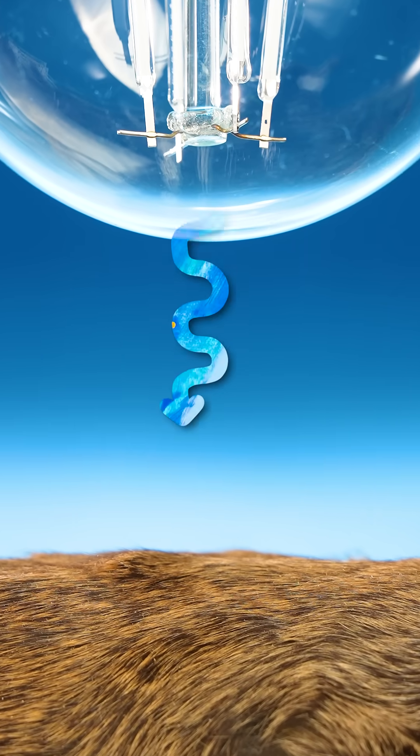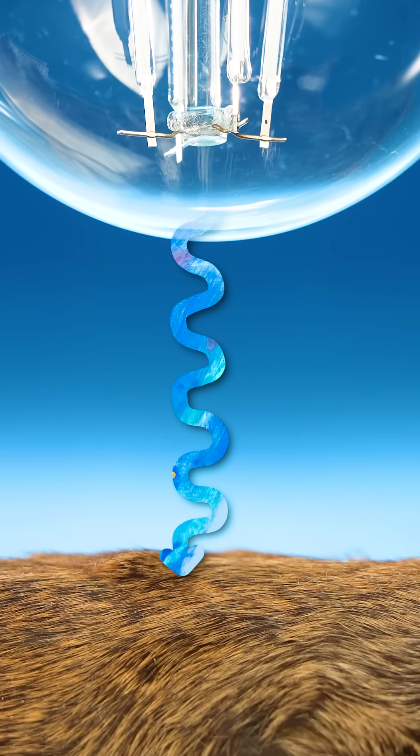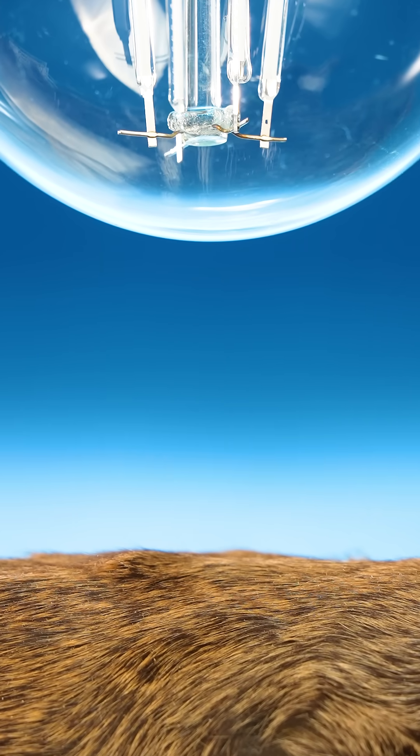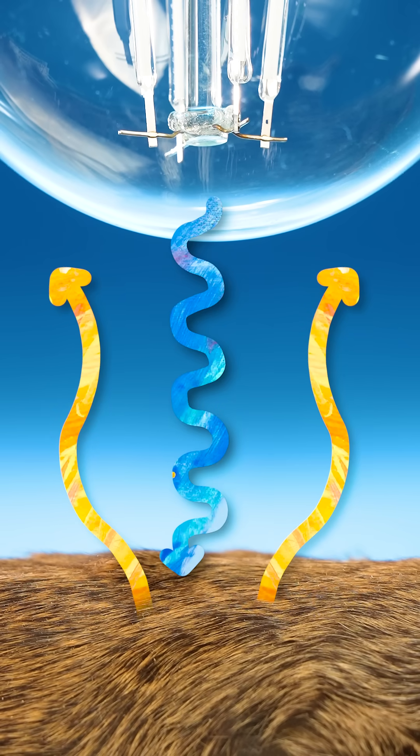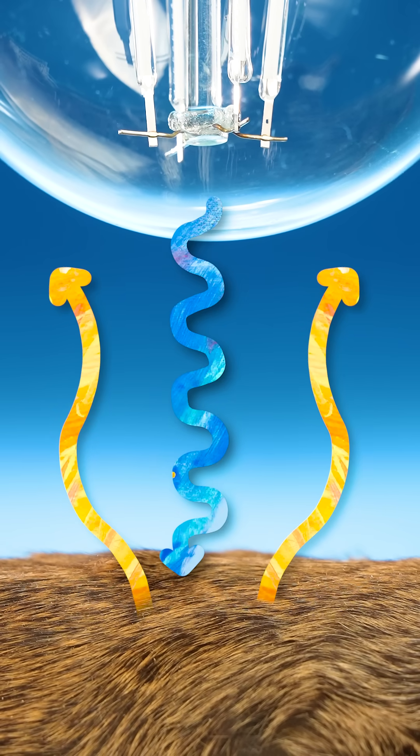Ultraviolet light hits the squirrel's fur, is absorbed, and then released back into the world at a different wavelength that we can see.